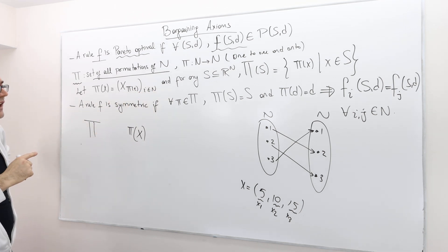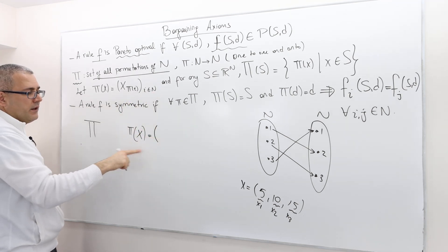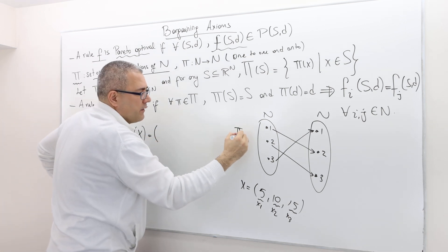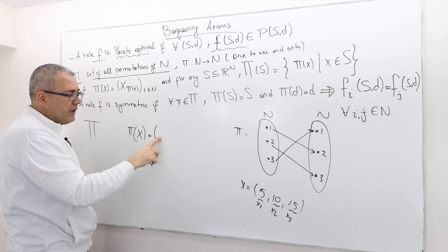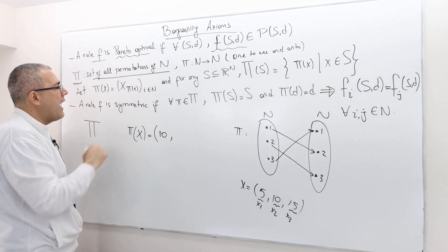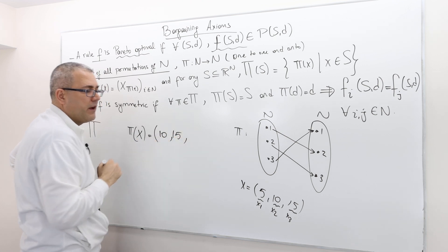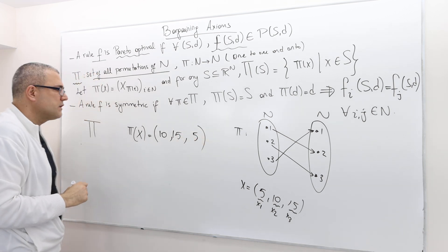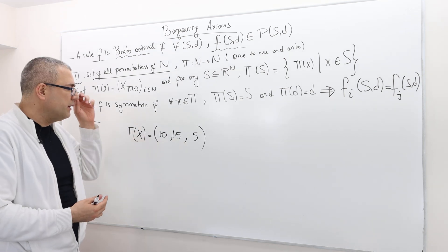What does that mean? I define this new payoff vector. When I say player one — remember according to my pi, player one is now new player two — so I should write player two's payoff, which is 10, instead of player one's, because one is now new two. When I say player two, I actually mean player three, so I put player three's payoff, 15. And when I say player three, I actually mean player one, so I write player one's payoff, 5. This is the permuted payoff vector.